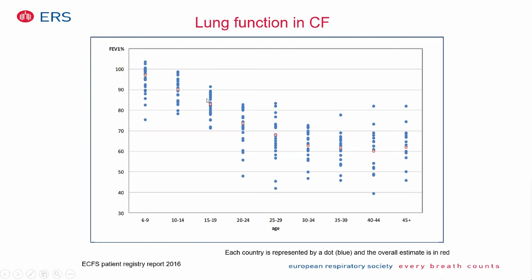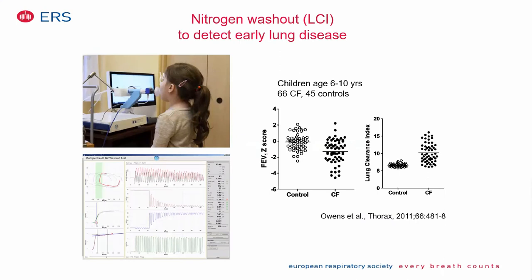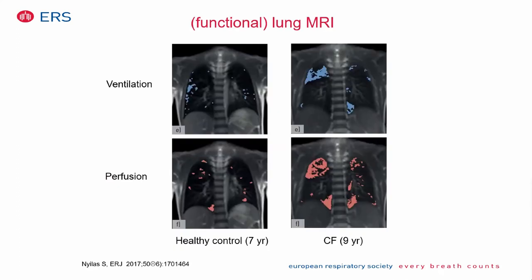Children in Europe now almost all have normal spirometry — median FEV1 values in adolescents are above 80% predicted, which in z-scores falls in the normal range. This means spirometry alone cannot detect early changes. The Lung Clearance Index (LCI) discriminates CF children from controls much better than FEV1 z-scores, enabling early detection of peripheral airway dysfunction. LCI should be used for monitoring early lung disease.